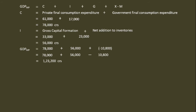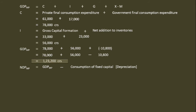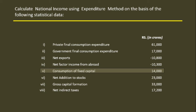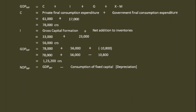The second step is estimation of Net Domestic Product at Market Price. Net Domestic Product at Market Price equals Gross Domestic Product at Market Price minus Consumption of Fixed Capital. Consumption of Fixed Capital is the same as Depreciation. So, 1,23,200 crores minus Consumption of Fixed Capital of 14,000 crores equals 1,09,200 crores.